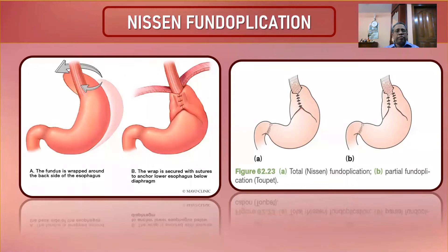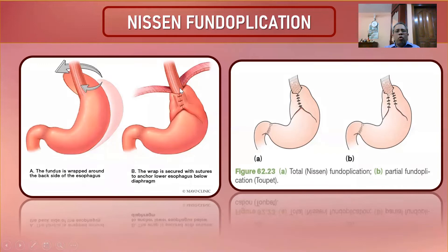Looking at the picture of Nissen fundoplication: the esophagus and stomach are identified, with the fundus on the left side. The fundus is pulled behind the esophagus from left to right, wrapped around it, and stitches are placed — acting as a barrier preventing migration of the lower esophagus into the chest and preventing reflux.